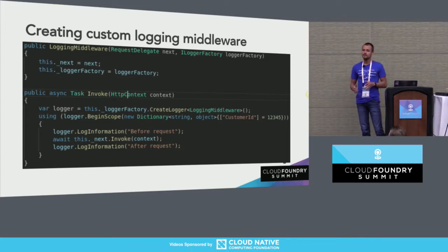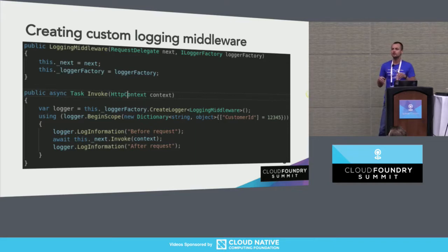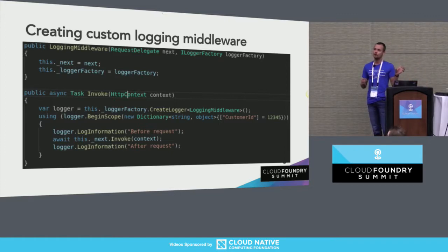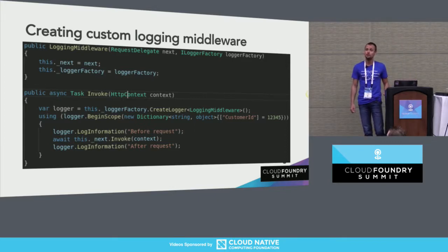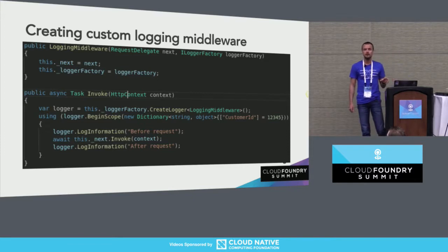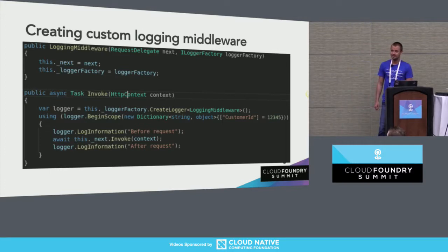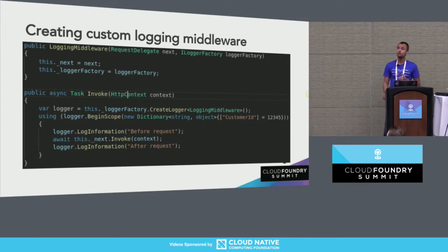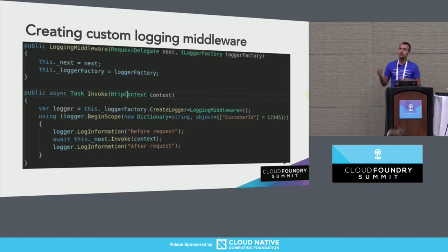After we have our logger configured, we can utilize it. What we really want is to transparently add tags to all our messages. We don't want to attach request ID and user ID each time we log something — that's where middleware comes into play. Middleware is a very useful method to implement functionality before and after your request is processed. Here you can see we write a string to the log before the request and after the request.